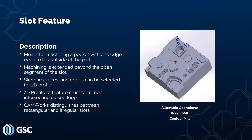The next feature type is the slot feature. A slot feature is essentially a pocket with one edge open to the outside of the part. Where you see the dotted lines, that is the open area the cutting tool is free to travel in and out of — machining is extended beyond the open segment of the slot. You can select sketches, faces, and edges for the 2D profile, which must form a non-intersecting closed loop. CAMWorks distinguishes between rectangular and irregular slots, but the allowable operations for machining a slot feature are rough mill and contour mill.